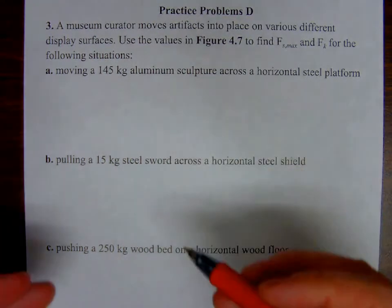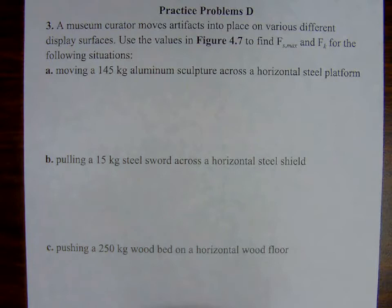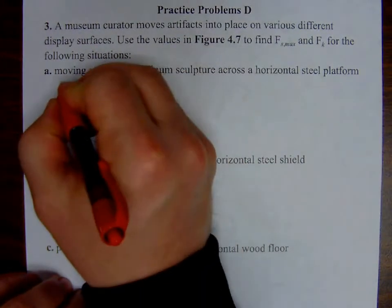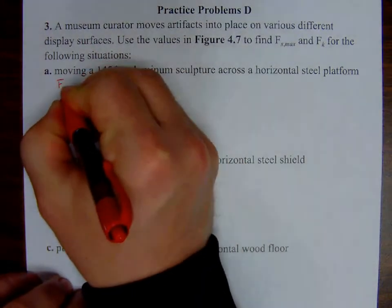Actually I don't have to, never mind, I don't have to, just using the definitions. I freaked myself out. Okay, so I know that FFmax is equal to coefficient of static friction multiplied by the normal force.